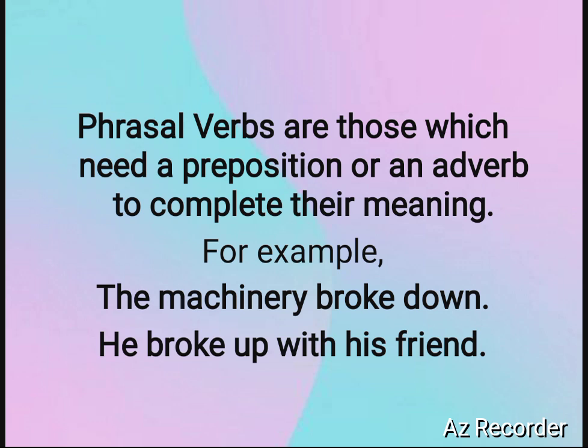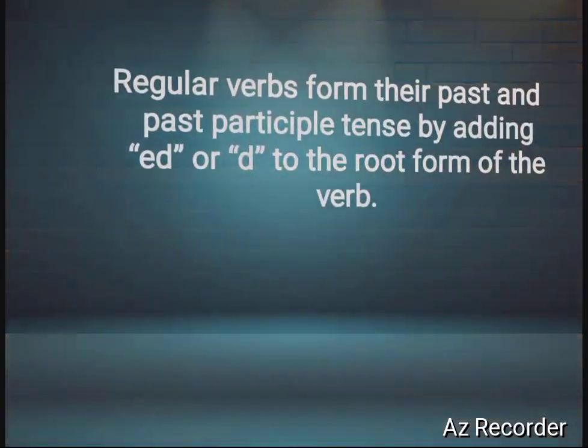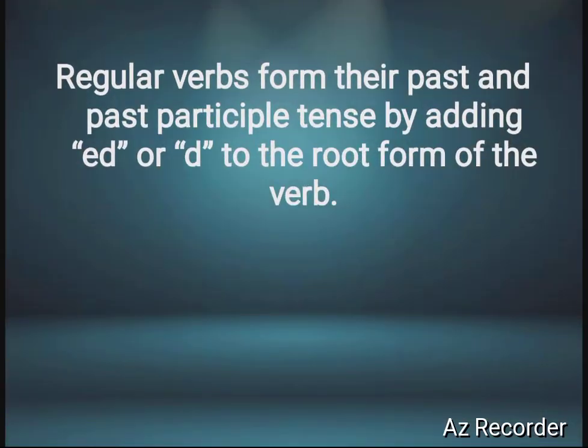Phrasal verbs are a very important topic in exams, especially in the 10th and 12th board exams. Now, the next type of verbs are regular verbs. Regular verbs are those which are formed by adding 'ed' or 'd' to their root form. These verbs form their past or past participle tense by adding 'ed' or 'd'. For example, if we say 'walk' and add 'ed', it becomes past tense 'walked'. Similarly, adding 'ed' to 'jump' gives us 'jumped'. This means regular verbs.